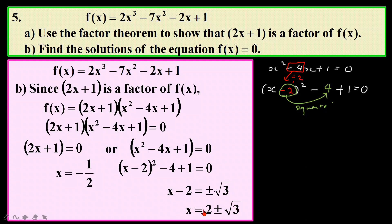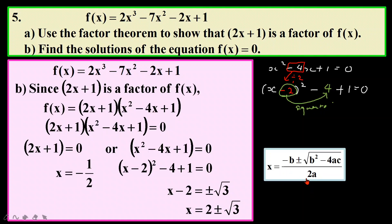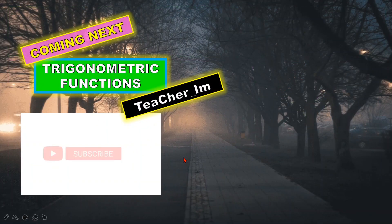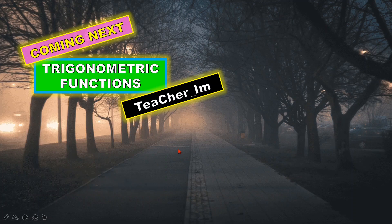If you don't want to use completing the square, you can also use the quadratic formula, where A equals 1, B equals negative 4, and C equals 1. Fitting it into the formula will still give you the same answer. So I'm just teaching you two methods to solve something you cannot factorize directly. That is the end of this video. Next, I'm going to talk about trigonometric functions. Give me a like, introduce me to your friends, and please consider subscribing. Thank you for watching — I will see you in my next video.